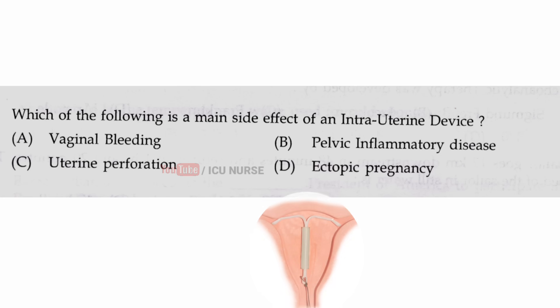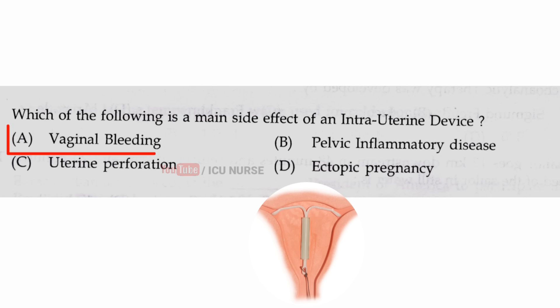Which of the following is a main side effect of an intrauterine device? The correct answer is A, vaginal bleeding.